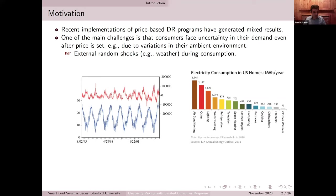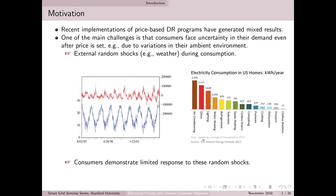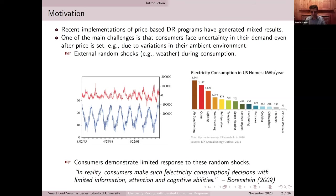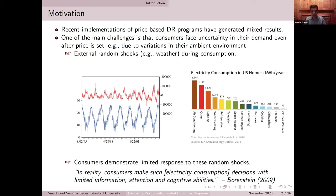Why do we have this lack of response from consumers in terms of responding to changes in the ambient environment? This has been attributed to the limited cognitive ability and attention that consumers pay to what happens in the outside ambient environment. As Ernest Ornstein, a prominent energy economist at Berkeley, puts it: in reality, consumers make electricity consumption decisions with limited information, attention, and cognitive ability. That is something that the developers of price-based incentive programs or demand response programs essentially miss — that is what they don't take into account.